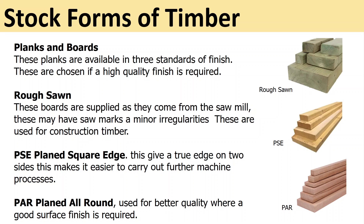Planks and boards are available in three standards of finish, chosen depending on whether you need a rough finish or a very high quality finish. First, rough sawn: these boards are supplied as they come from the sawmill and may have saw marks or minor irregularities — used for building and construction. Next, planed square edge: this gives a true edge on two sides, making it easier to carry out further machine processes. Finally, planed all round: a better quality finish on all four sides.